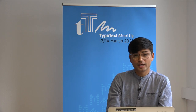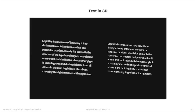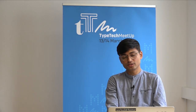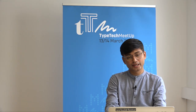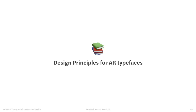3D text is another area many are experimenting with, but right now it remains problematic. Adding depth on a third axis introduces weight in unexpected ways, and legibility suffers — viewed from the side, letters like 'e' and 'a' become hard to distinguish. Type designers need to find better approaches to implementing 3D text rather than simply extruding flat letterforms.